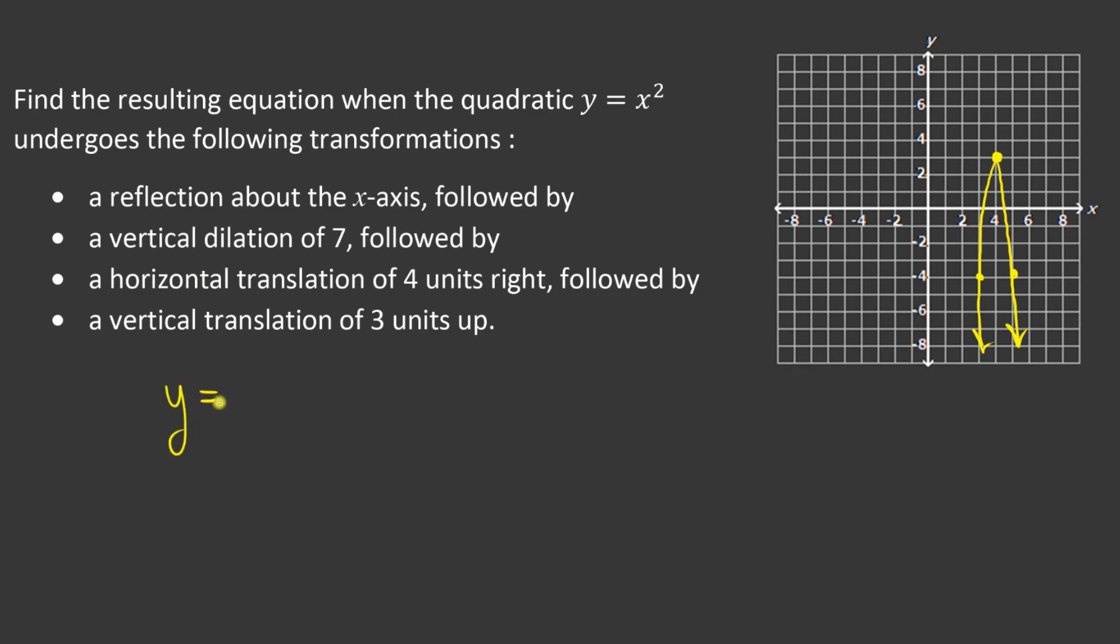Let's take a look at the equation now. If the first thing I was asked to do is a reflection about the x-axis, then I'll put my negative. A vertical dilation of seven is the next item. A horizontal translation of four units to the right, followed by the final one of a vertical translation of three units up.